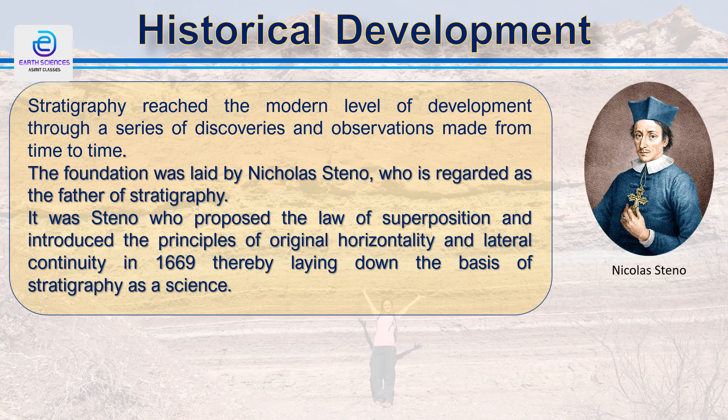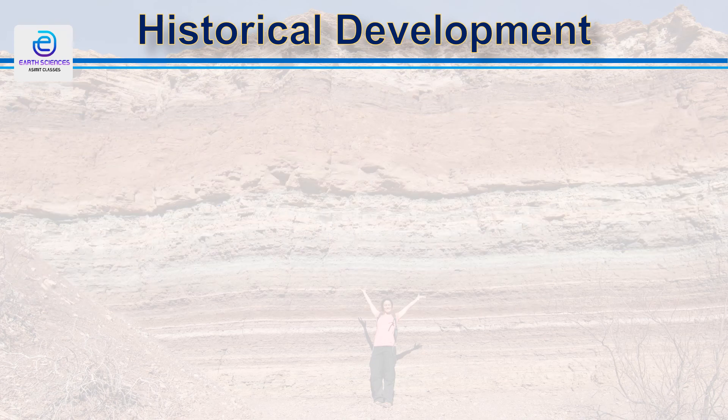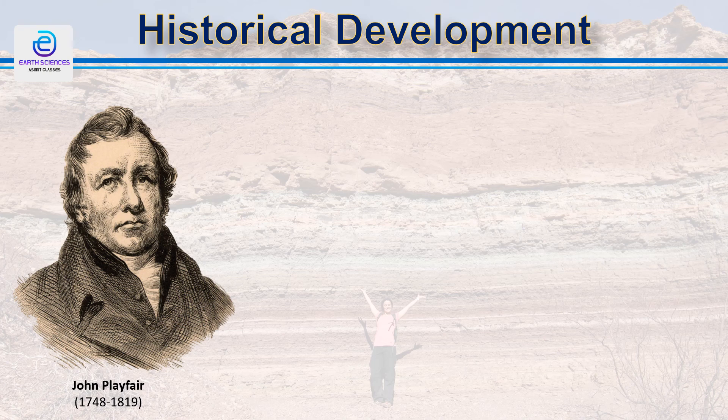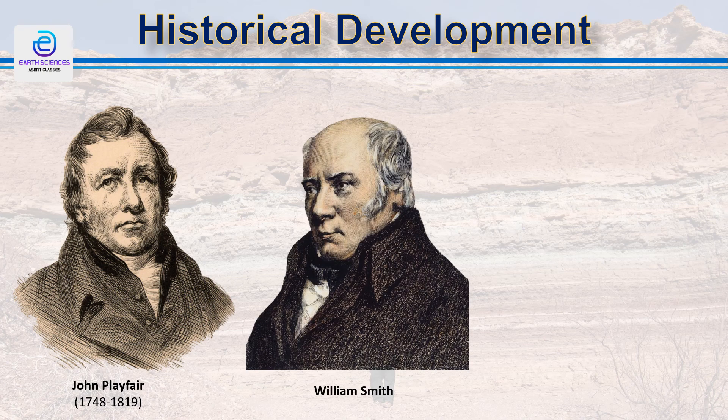Stratigraphy reached its modern level of development through a series of discoveries and observations made over time. The foundation was laid by Nicolas Steno, who is regarded as the father of stratigraphy. It was Steno who proposed the law of superposition and introduced the principles of original horizontality and lateral continuity in 1669, thereby laying down the basis of stratigraphy as a science. William Smith was the first to propose the concept of layering in sedimentary rocks and introduced the term strata to denote these layers. Smith also published the first geological map of Great Britain.